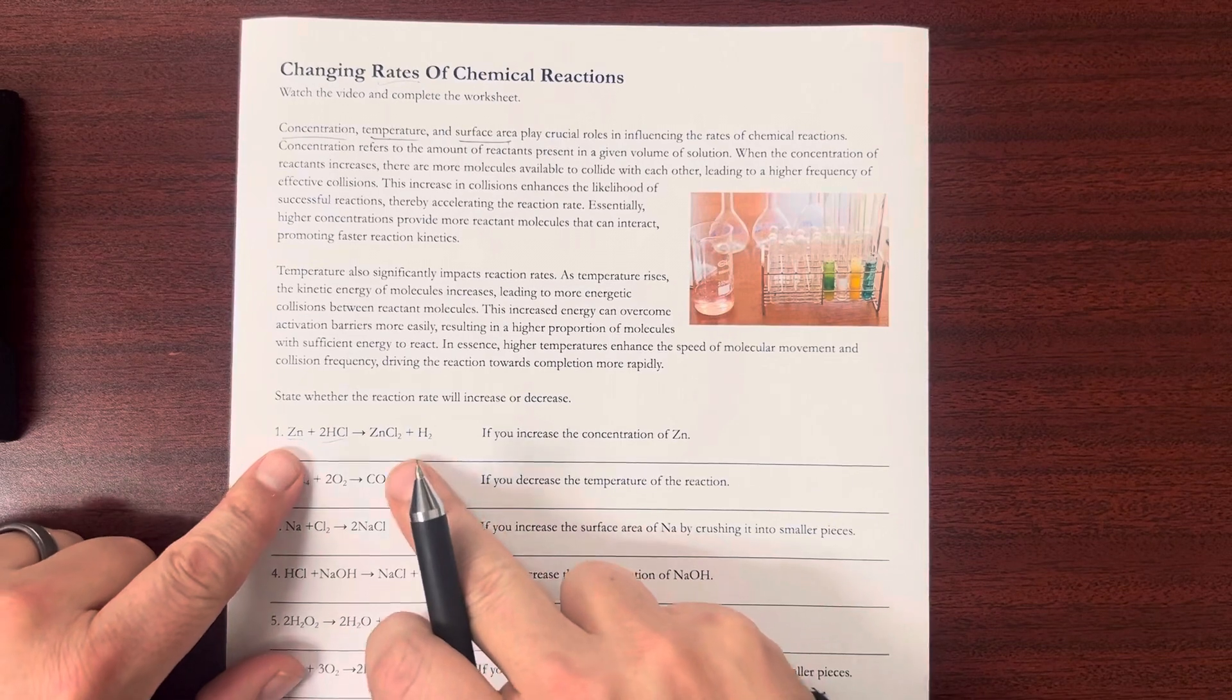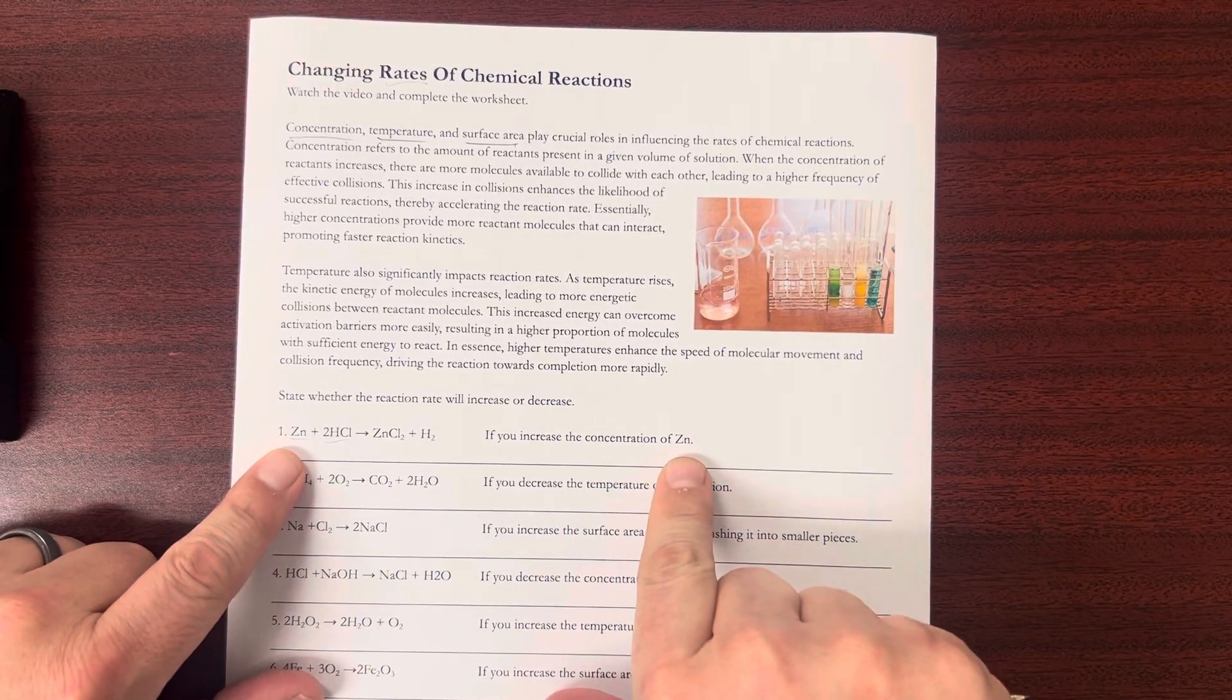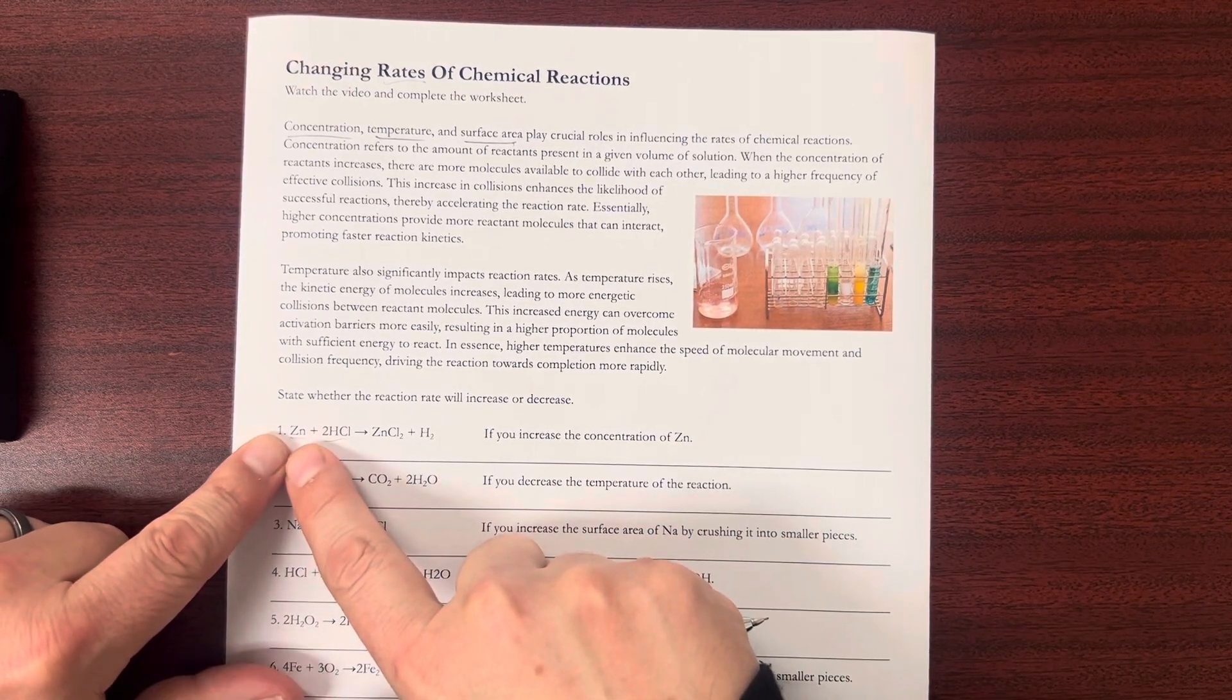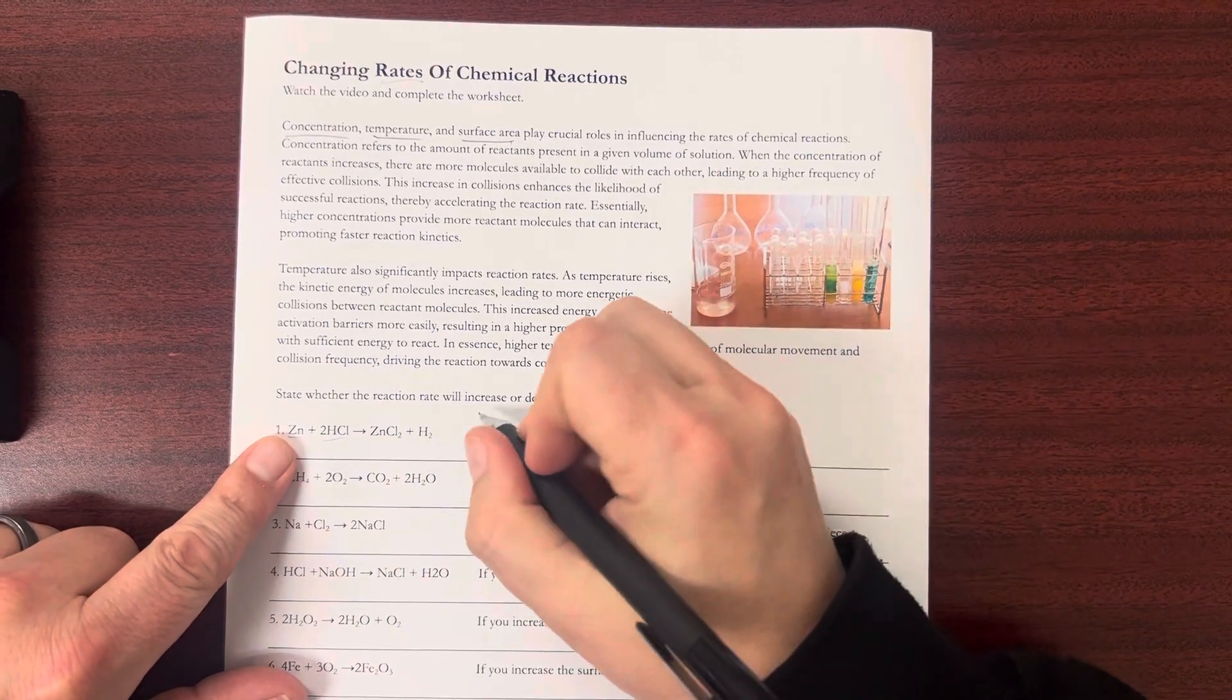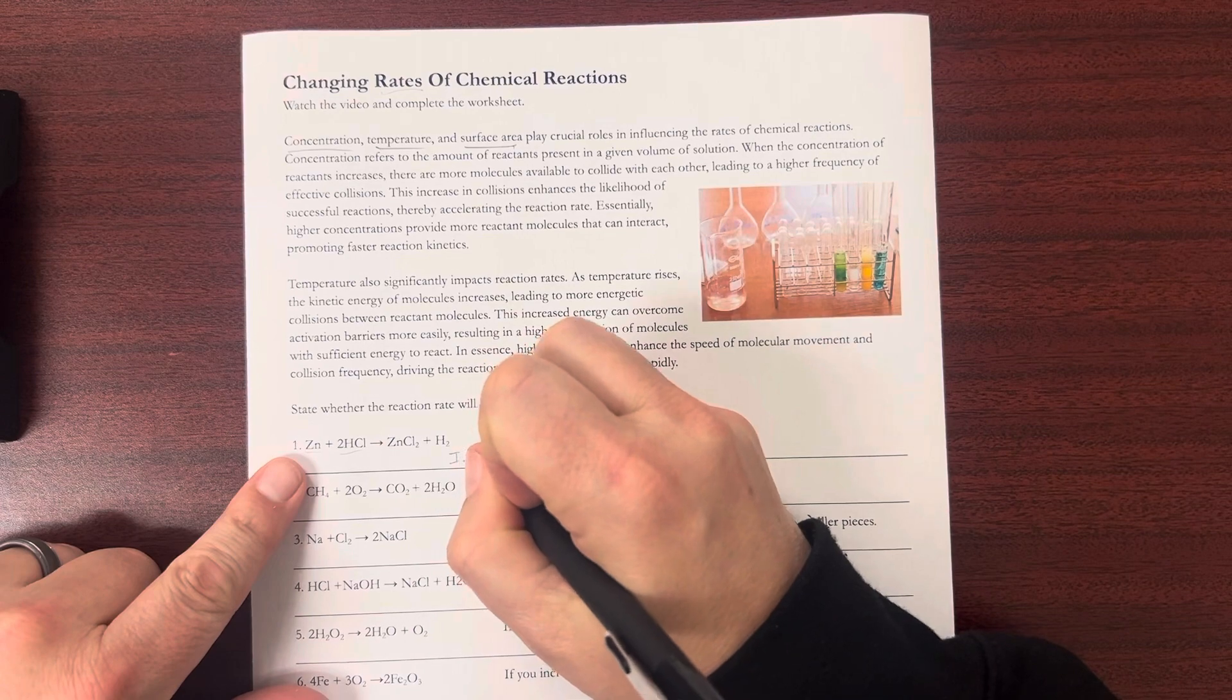So let's take a look at this first one. It has an equation here, and it says, if you increase the concentration of Zn, so by putting more of that in, there's more collisions, which increases the rate. So I'm just going to write increase.